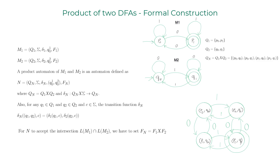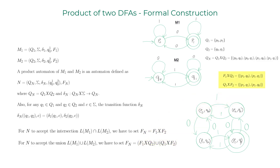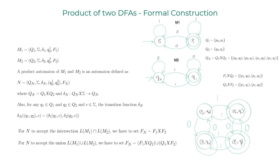To construct a machine that accepts the union of L(m1) and L(m2), the final states are defined as (F1 × Q2) ∪ (Q1 × F2). F1 × Q2 gives the pairs (p1, q0) and (p1, q1); Q1 × F2 gives (p1, q1). Taking the union, we end up with three accept states, which I mark in the DFA. That DFA accepts the union language — strings with an odd number of 0s or an odd number of 1s.